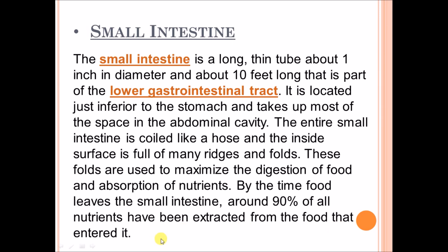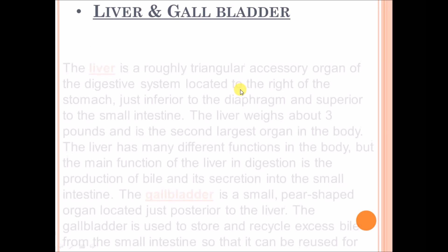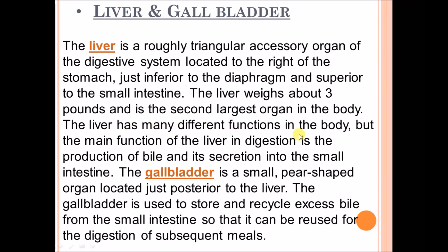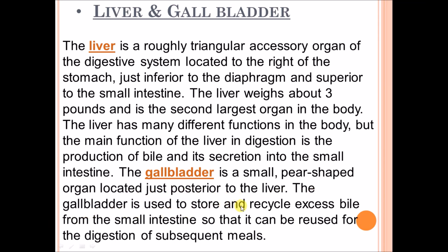The liver is a roughly triangular accessory organ of the digestive system, located to the right of the stomach, just inferior to the diaphragm and superior to the small intestine. The liver weighs about three pounds and is the second largest organ in the body. Its main function in digestion is the production of bile and its secretion into the small intestine. The gallbladder is a small pear-shaped organ located just posterior to the liver, used to store and recycle excess bile from the small intestine so that it can be reused for digestion of subsequent meals.